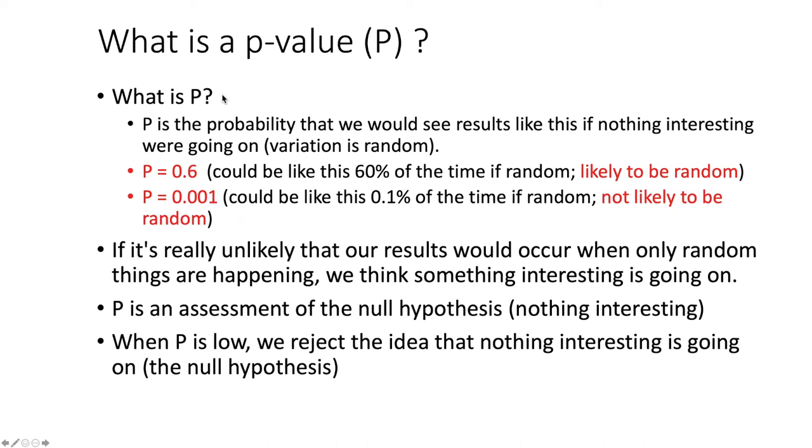So to evaluate this, we use the p-value, which is also abbreviated as simply p. p is the probability that we would get results such as what we got if nothing interesting was going on. In other words, if the variation that we're seeing is just random, we just happened to get some men that happened to be taller than average, or maybe we happened to get some women that were shorter than average. But if we'd gotten a different group of men and women, we would have perhaps found no difference at all.